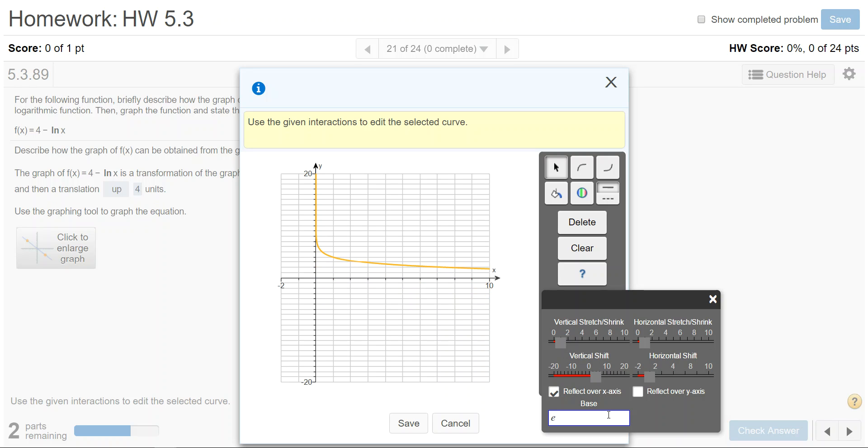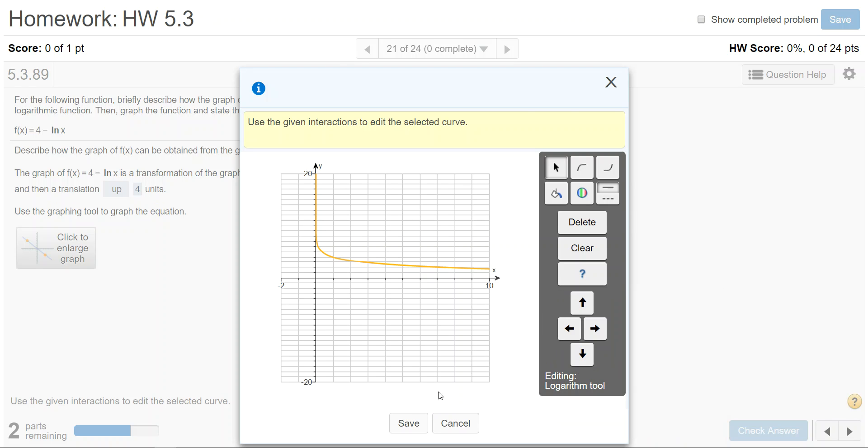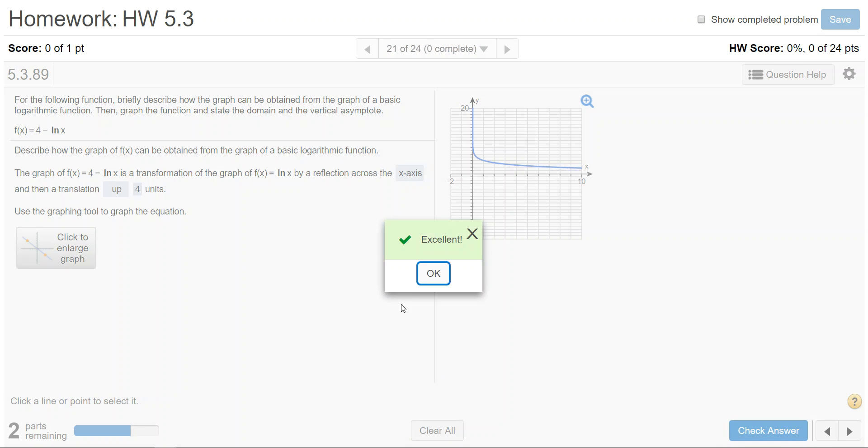Go down to the base box. It defaults to a base of e, which is the correct base for ln, and then x out of the tools and hit save, and then check the answer.